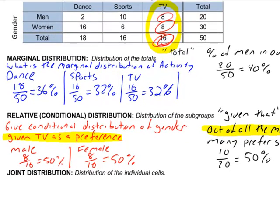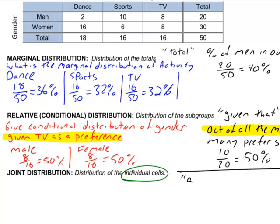Lastly, I want to talk about joint distributions. Joint distributions are going to be distributions of an individual cell. So typically, the keywords for these are going to be and or both. So the question might ask, what's the distribution of men who like to dance, or men and dance, or women that both like to, both are women and they like TV. So let's do men that dance. Men and dance. And these are always going to be divided by the total of the table. So men and dance, men is right here, and dance. And then out of 50. So this is 2 out of 50, and that is 4%.